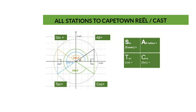We can summarize with a nice acronym: 'All Stations to Cape Town.' Some books call it the CAST rule, starting in the fourth quadrant — C, A, S, T. A stands for all ratios positive, S stands for sin positive (and cosec would also be positive), T stands for tan positive (and cot also positive), C stands for cos positive (and its inverse sec). Please learn this by heart — this is a very important rule.